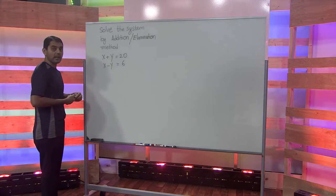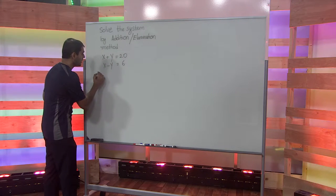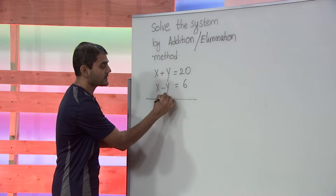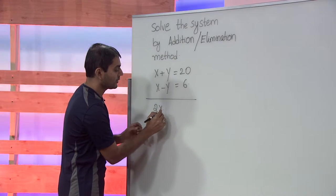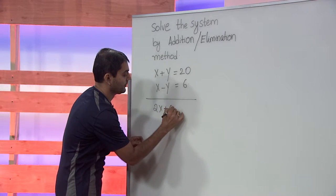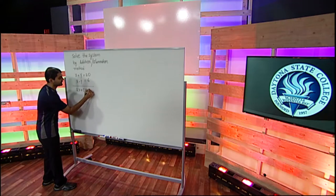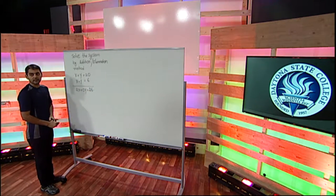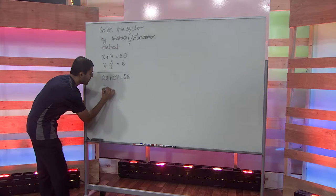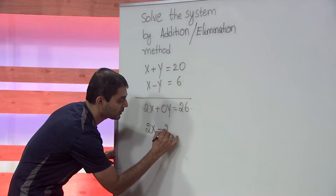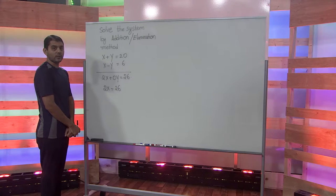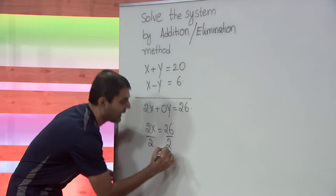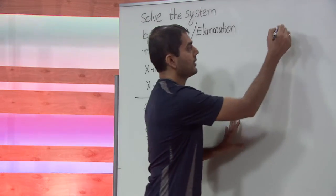We add the two equations: x plus x gives us 2x, and y minus y gives us 0. So 20 plus 6 gives us 26. Simplifying, we get 2x equals 26, and isolating x we get x equals 13.